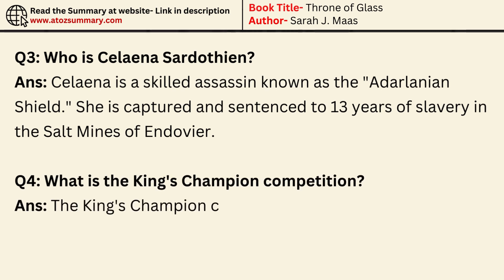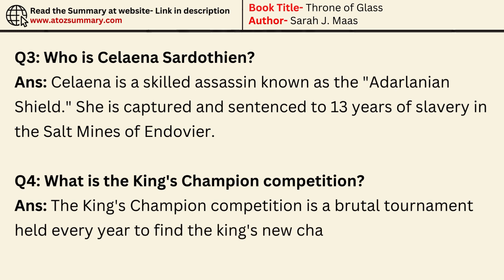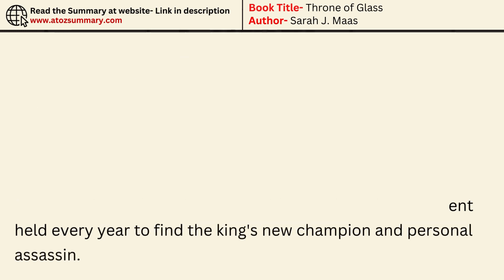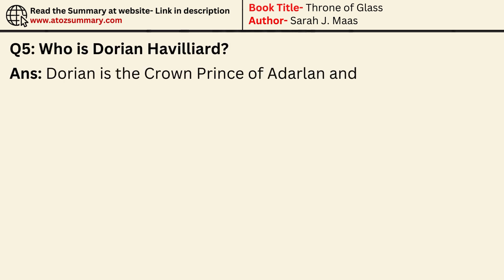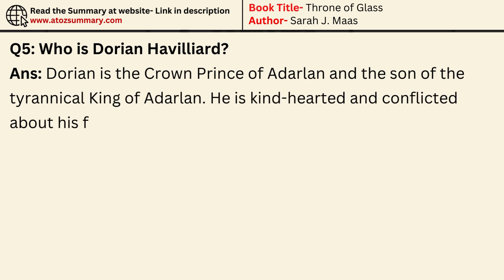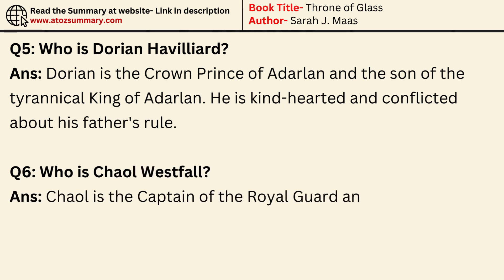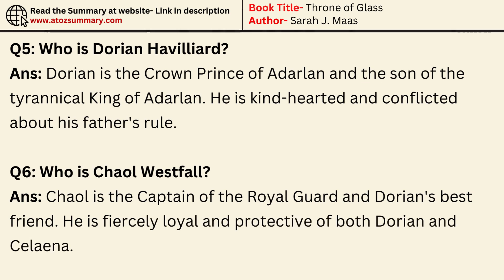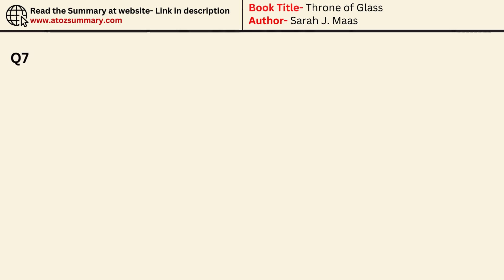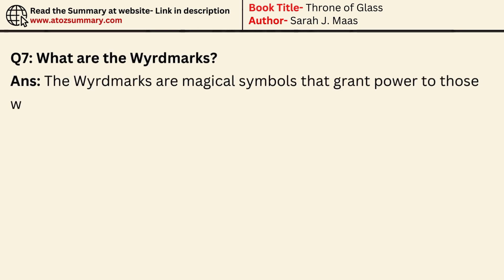What is the king's champion competition? The king's champion competition is a brutal tournament held every year to find the king's new champion and personal assassin. Who is Dorian Havilliard? Dorian is the crown prince of Adarlin and the son of the tyrannical king. He is kind-hearted and conflicted about his father's rule. Who is Kale Westfall? Kale is the captain of the royal guard and Dorian's best friend. He is fiercely loyal and protective of both Dorian and Selina. What are the wordmarks? The wordmarks are magical symbols that grant power to those who can control them, sought after by both good and evil forces.